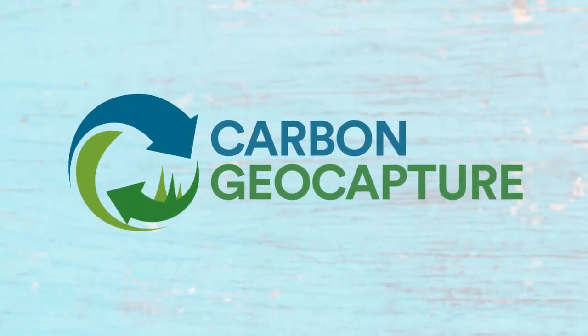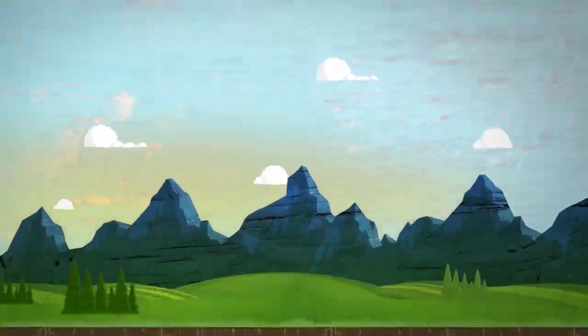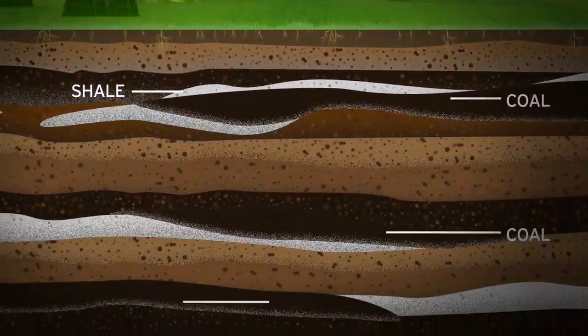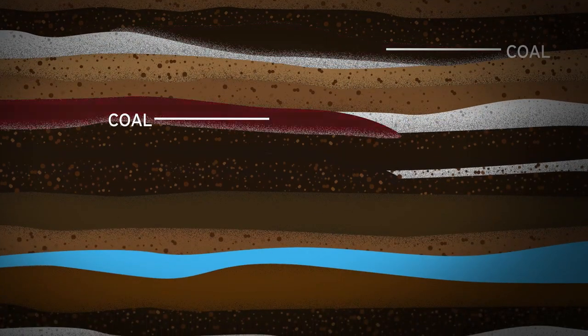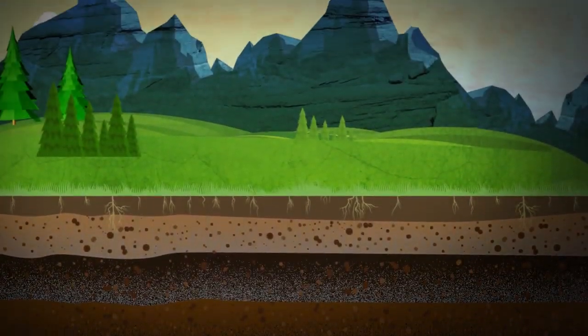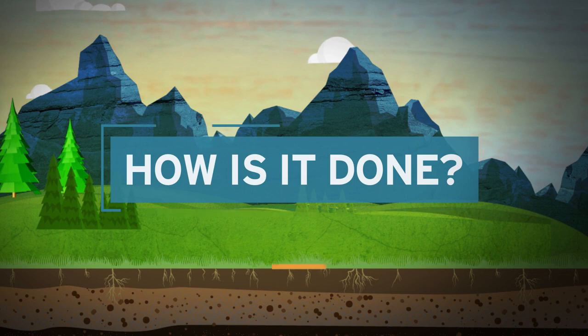Coal beds and shale underlie most of the world's landmass and can store more CO2 than is necessary to meet the world's climate goals. We sequester CO2, which means permanently storing carbon dioxide into the ground through a safe and efficient process. How on earth do we do this?